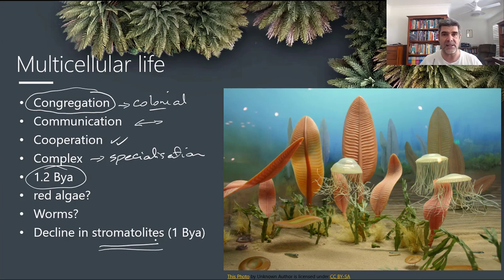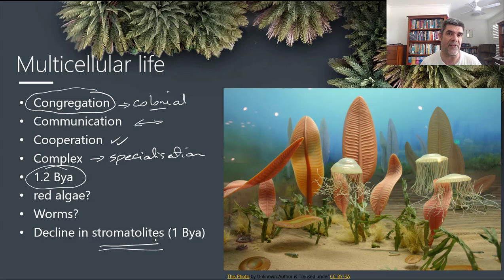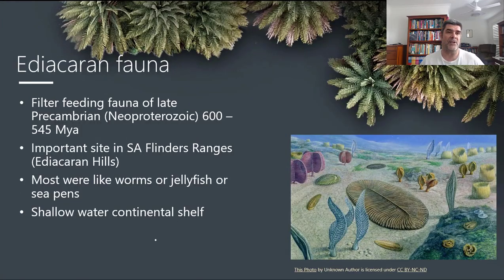Remember, stromatolites are basically little bacterial beds — cyanobacteria building mats of sediment alternating as they built their way up towards the light for photosynthesis. Around about a billion years ago the stromatolites start to decline in the fossil record, and perhaps that's suggestive of a predator now capable of successfully grazing on those bacterial mats. Despite a few ideas about things popping up earlier, the two key assemblages we're going to look at are the Ediacaran fauna and the Cambrian fauna.